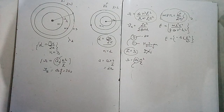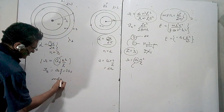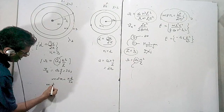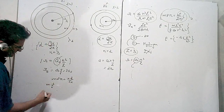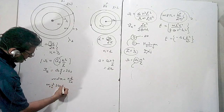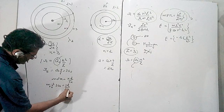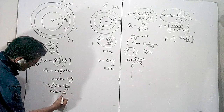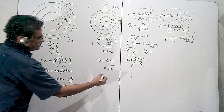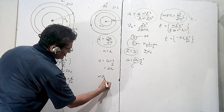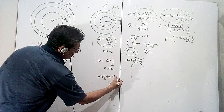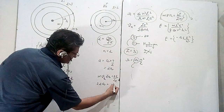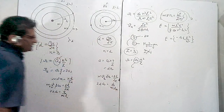Applying mvr = nh/2π for lithium: m × v_Li × 3a₀ = 3h/2π, which gives 2πa₀ = h / (m × v_Li). Similarly for helium: m × v_He × 2a₀ = 2h/2π, and the 2's cancel, giving 2πa₀ = h / (m × v_He). Both expressions equal the same quantity.